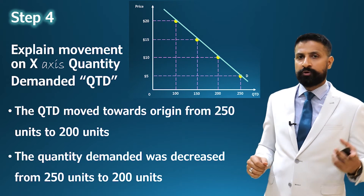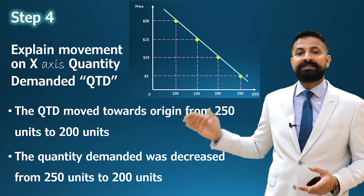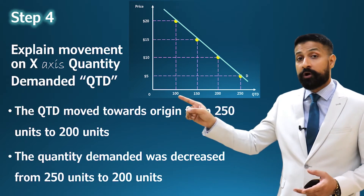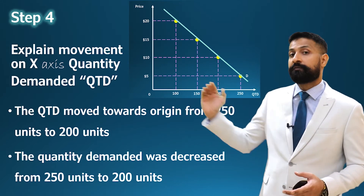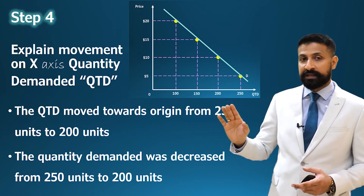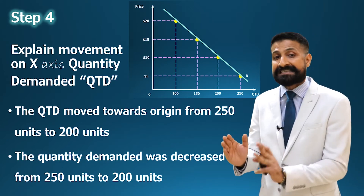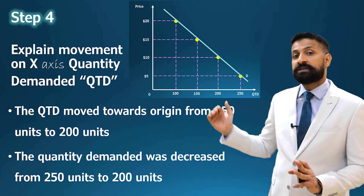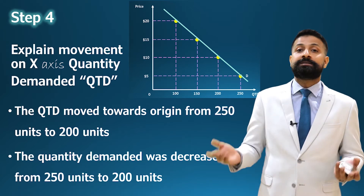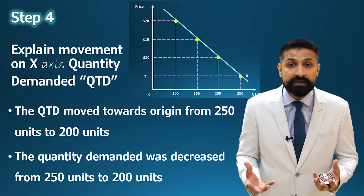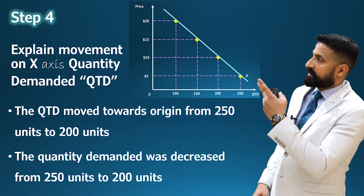Step number four: now explain the same movement on the x-axis where you have quantity demanded. There are two ways. First: 'The quantity demanded moved toward origin from 250 to 200' — make sure to write 'toward.' Second: 'The quantity demanded decreased from 250 to 200.' Some students only write numbers, but that is not needed. Explanation carries approximately 4 marks.